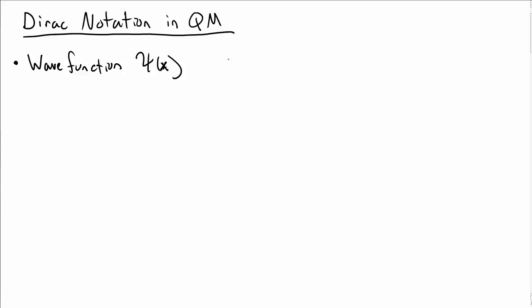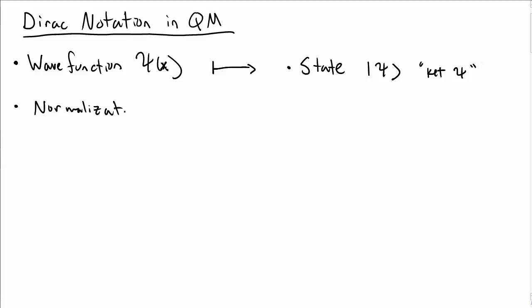I want to talk about the use of Dirac notation in quantum mechanics. The basic ingredient in quantum mechanics is the wave function, and in Dirac notation we're going to represent that by the state ket psi. We'll literally say ket psi when we talk about that. The state ket psi is bigger than just the wave function — that's the idea.